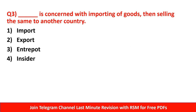Question number 3: Dash is concerned with importing of goods then selling the same to another country. Options include import, export, entrepot, and insider. Basically, here you import goods, make some changes, and then re-export to a different country. For example, importing commodities, making changes in India, and selling in a different country - that is called entrepot trade. So entrepot is concerned with importing goods and then selling the same to another country.